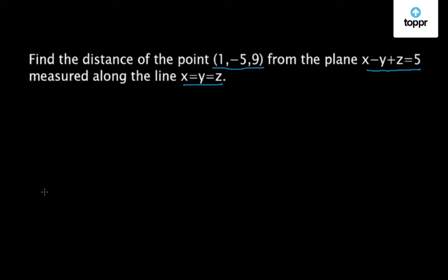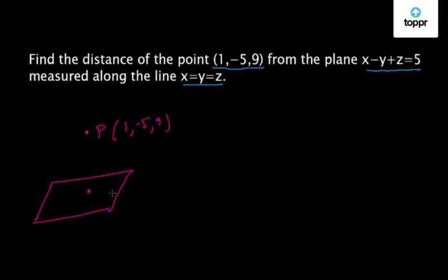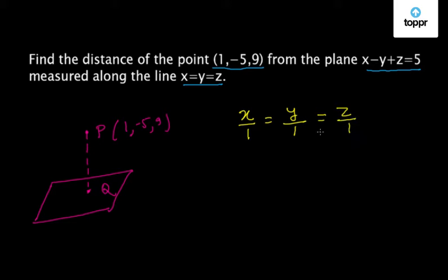First of all, let us draw the situation given in the problem. This is the plane and this is the point P which is (1, -5, 9). Now this line x equal to y equal to z can be written as x by 1 equal to y by 1 equal to z by 1, where 1, 1, and 1 are the direction ratios of this line.